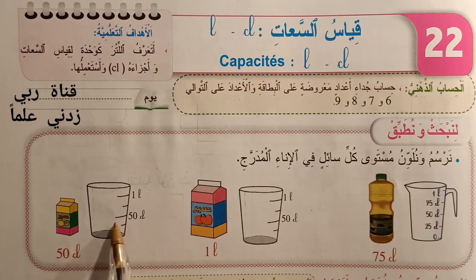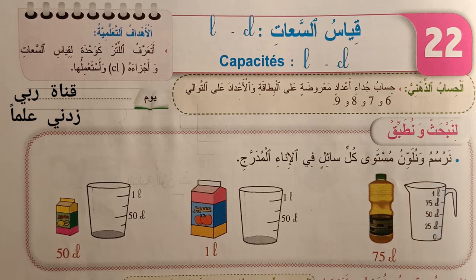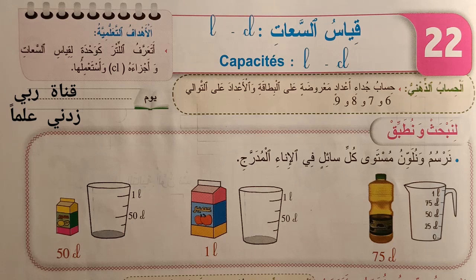ونلون الأسفل. إذن إلى هنا أتينا إلى نهاية هذه الحصة الأولى. المرجو من التلاميذ أن يتذكروا بأن 100 سنتي لتر تساوي واحد لتر. والسلام عليكم ورحمة الله تعالى وبركاته.